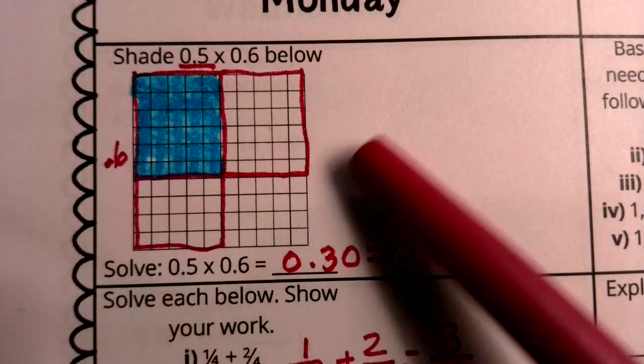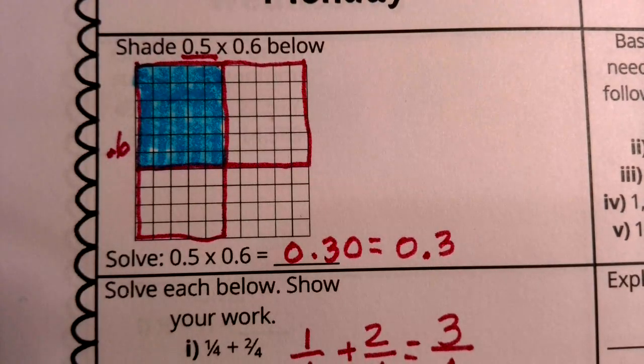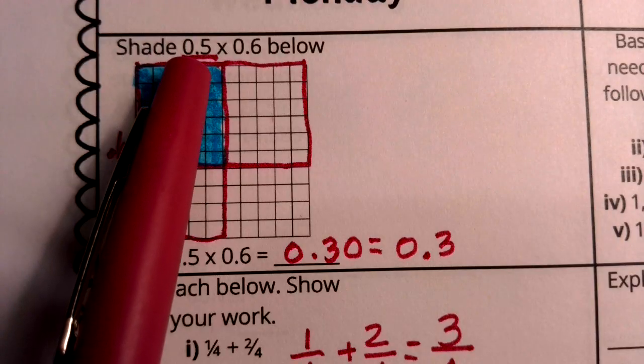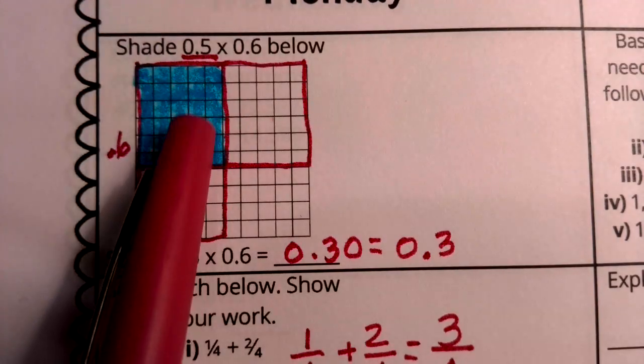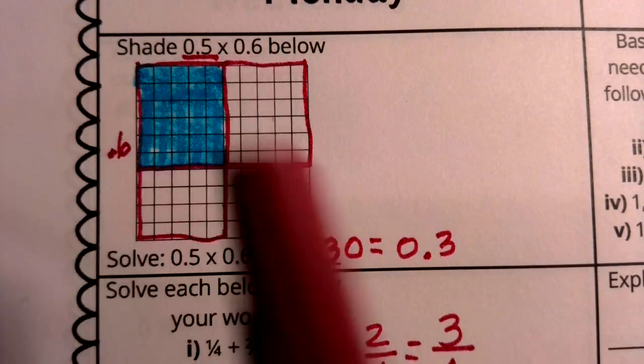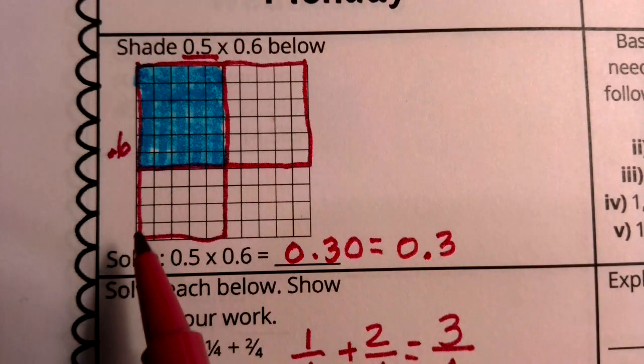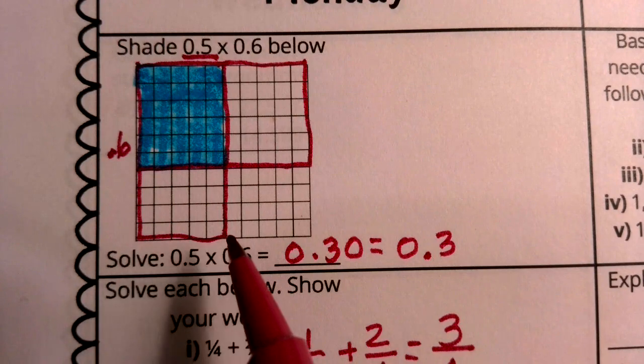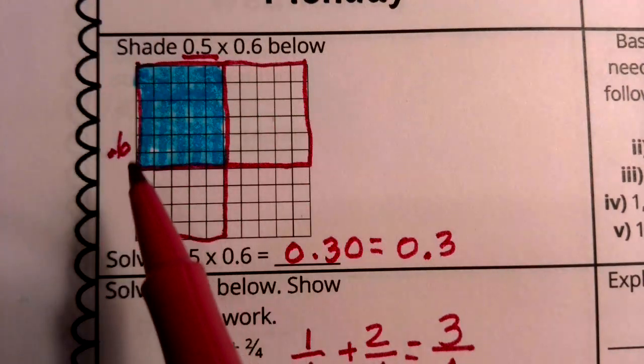Now I want to show you what I've done here with multiplying decimals. First of all, I have taken my five tenths and I have shown that in my grid. So I have boxed in this pink area, this rectangle, I have boxed five out of ten tenths.